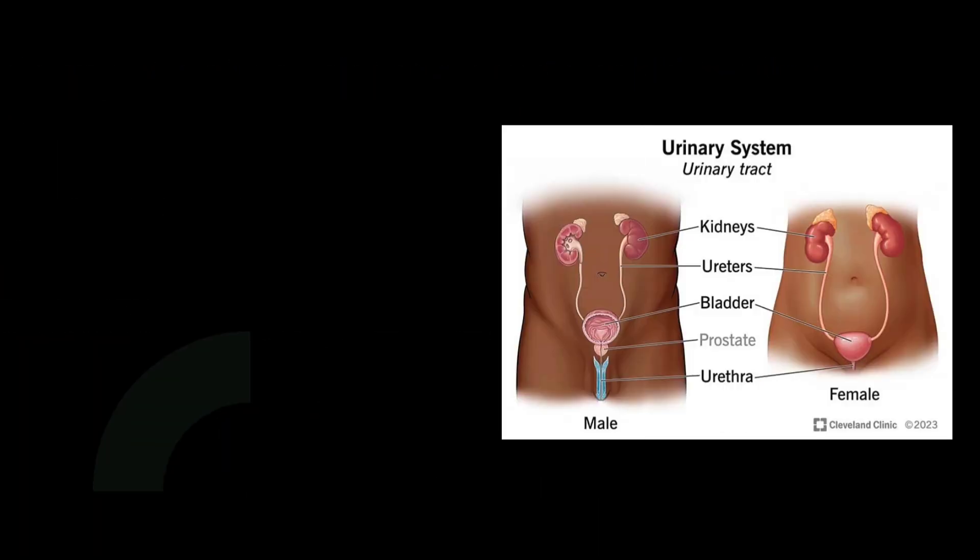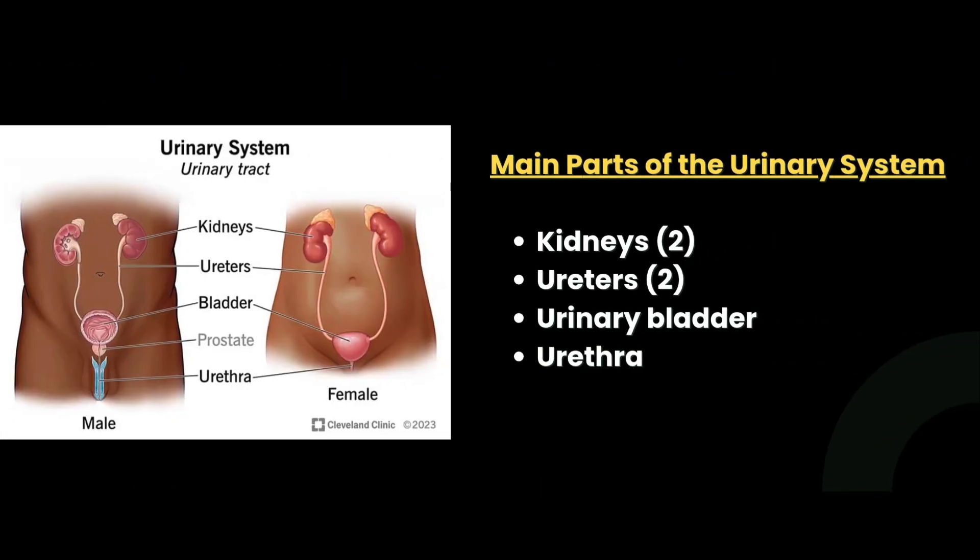Then we have to talk about the main parts of the urinary system. The main parts include two kidneys, two ureters, urinary bladder, and urethra.